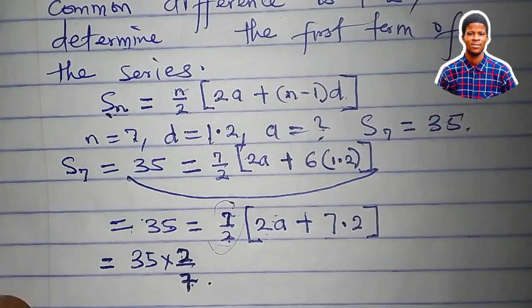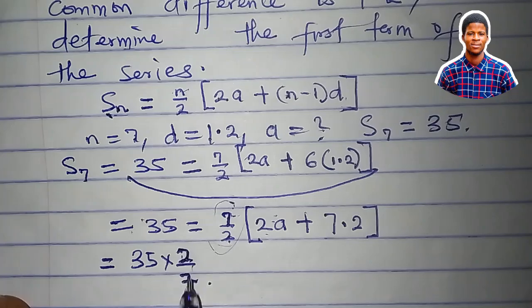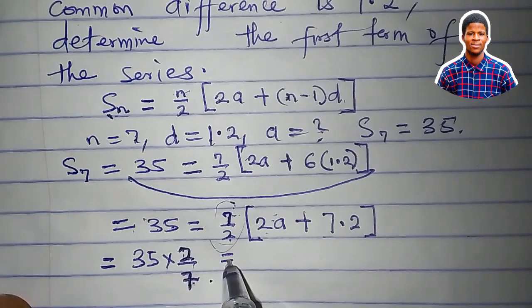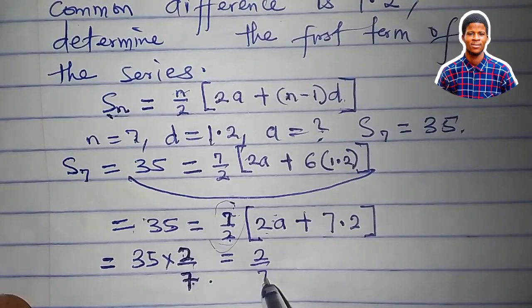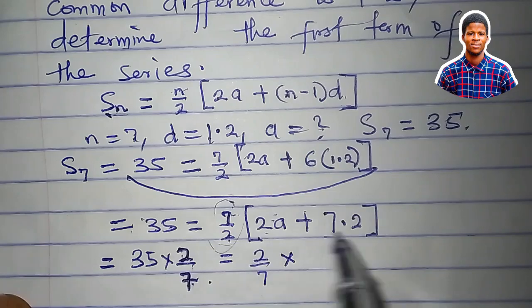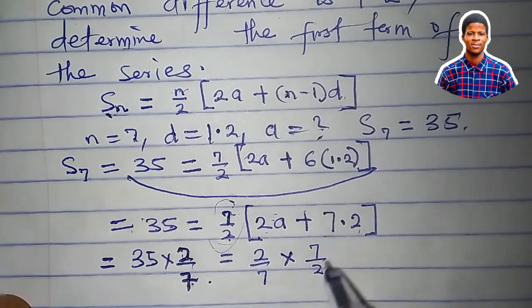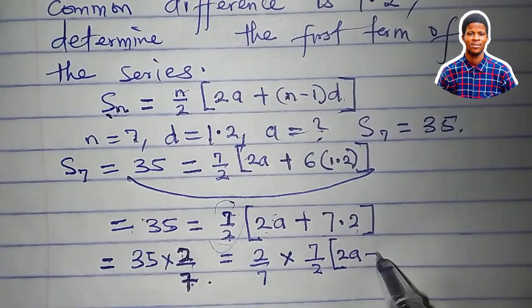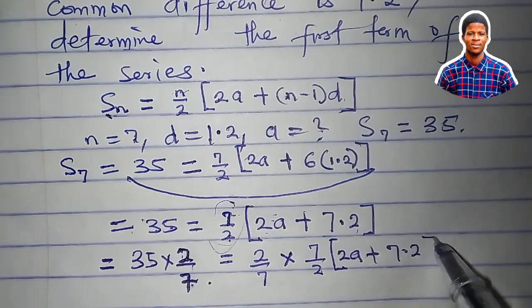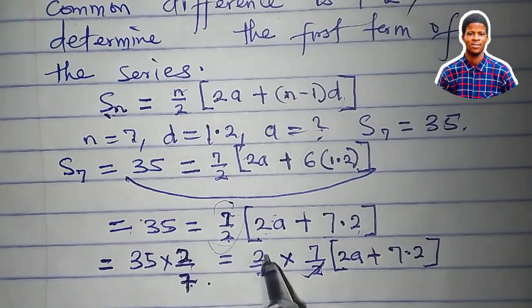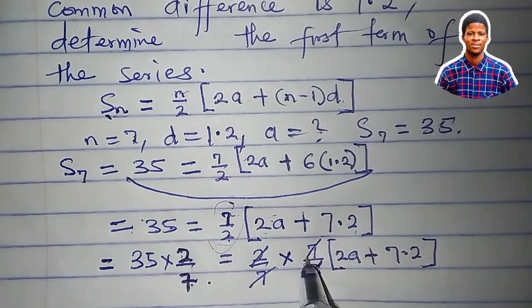35 times 2 over 7 equals 2 over 7 times everything here: 7 over 2 in brackets, 2a plus 7.2. So 2 can cancel 2, 7 can cancel 7.